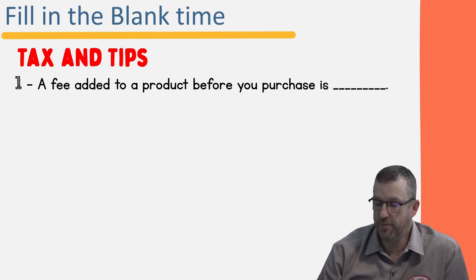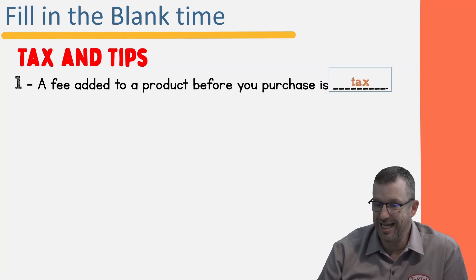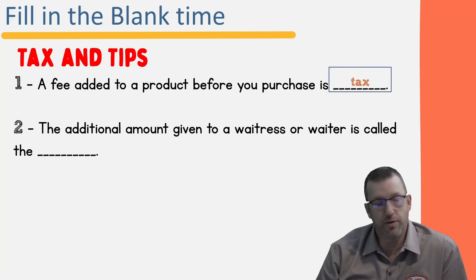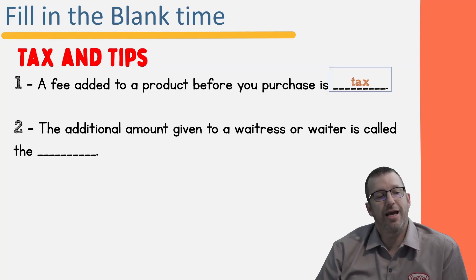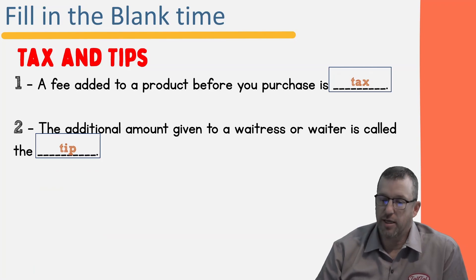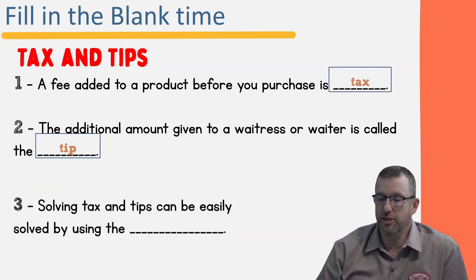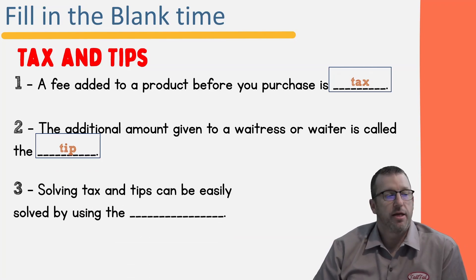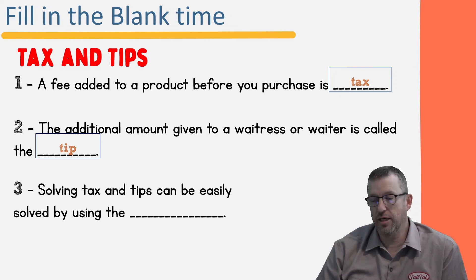To summarize: a fee added to a product when you purchase it — typically collected by the government — is called tax. When someone in the service industry takes care of you, it's common to give a waiter or waitress a tip — the additional amount you give on top of your bill. Solving for tax and tip can easily be done using the thingy thang proportion method.